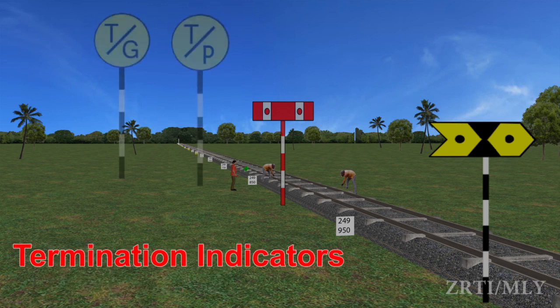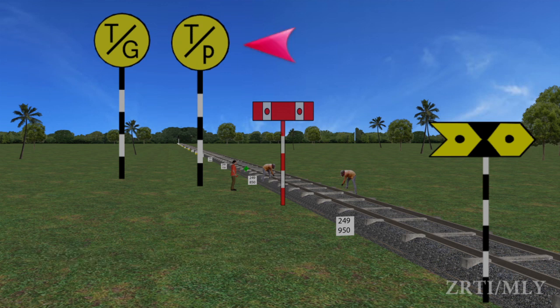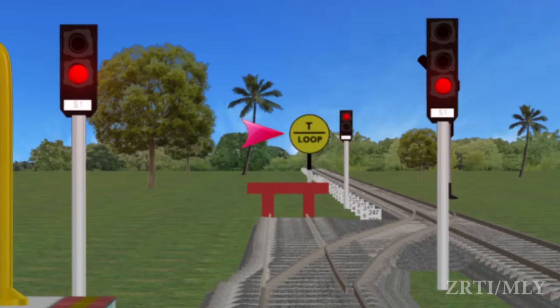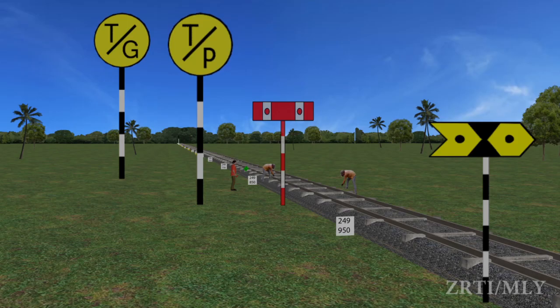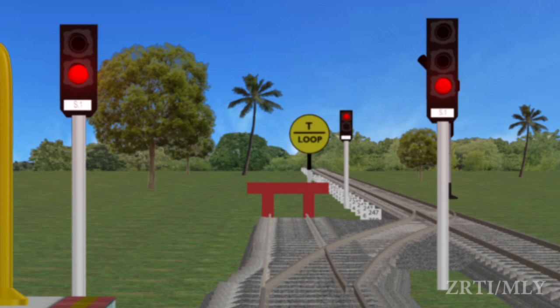Termination Indicators shall indicate the point from which the normal speed may be resumed. These are of three types: Termination Indicator for Passenger Trains (T-Bar P), Termination Indicator for Goods Trains (T-Bar G), and Termination Indicator for Loop Line. These shall consist of a yellow disc with black T-Bar P, T-Bar G, or T-Bar Loop letters.